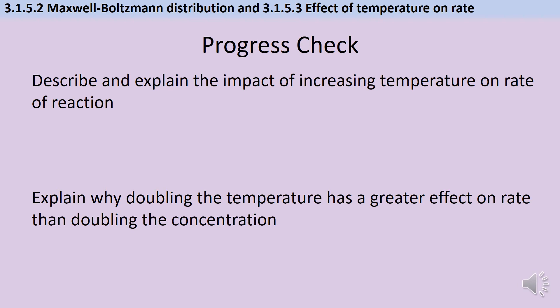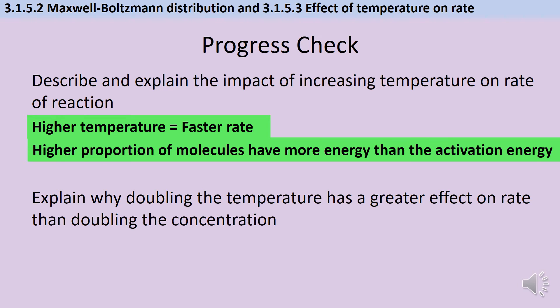Firstly we're asked to describe and explain the impact of increasing temperature on the rate of reaction. Realistically at A level we're unlikely to get credit for describing because this is really GCSE knowledge but I think it's important that we put it in anyway. So at a higher temperature the rate of reaction is going to be faster. The reason for this is that a higher proportion of molecules have more energy than the activation energy. In our Maxwell Boltzmann distribution curve they lie to the right of that activation energy line. Therefore there's going to be a higher frequency of successful collisions or more successful collisions happening per unit time or per second.